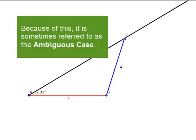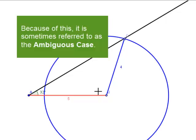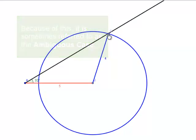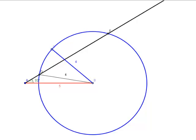So let's create a circle that represents all possible positions of this end point C. And you can see that it intersects our ray twice. And what that means is that I actually have two different triangles that I could form with the same set of information. So let's go ahead and form these triangles.